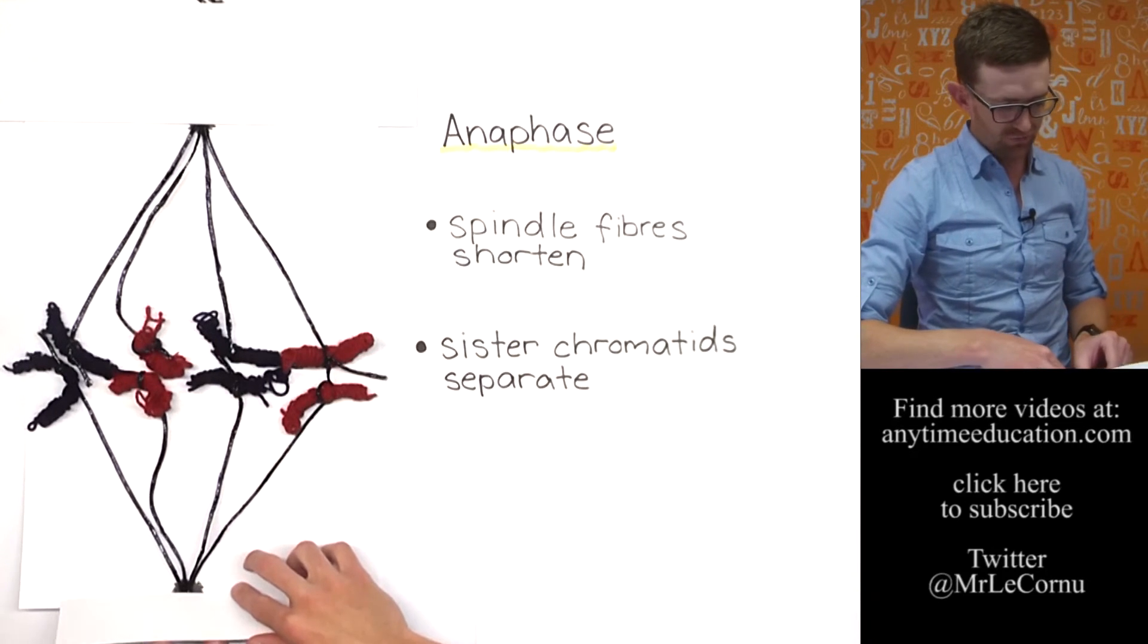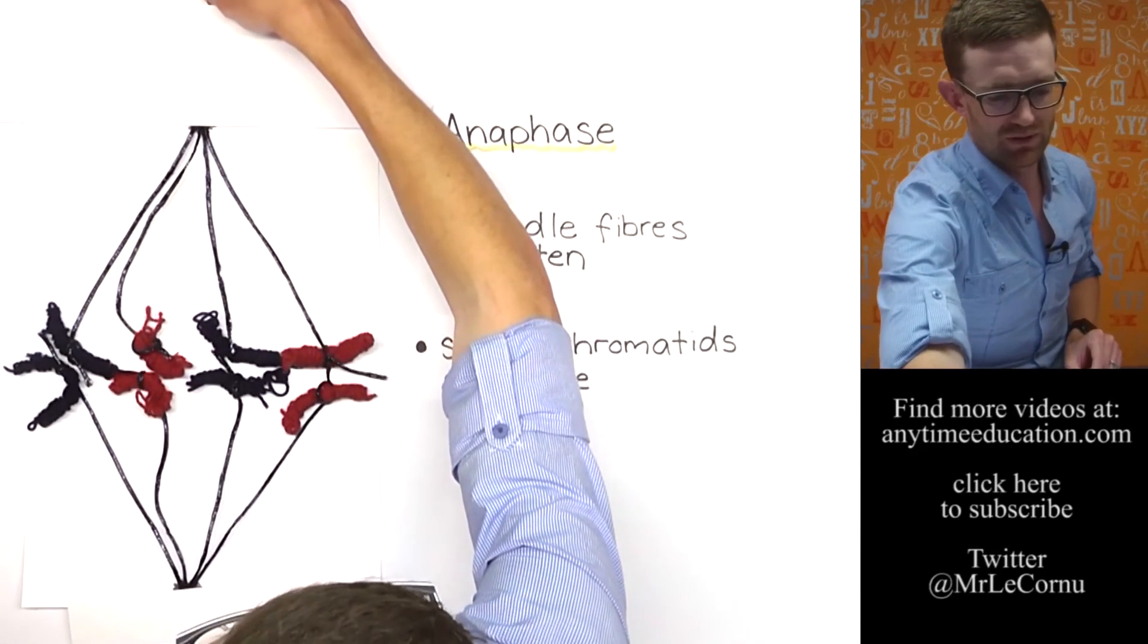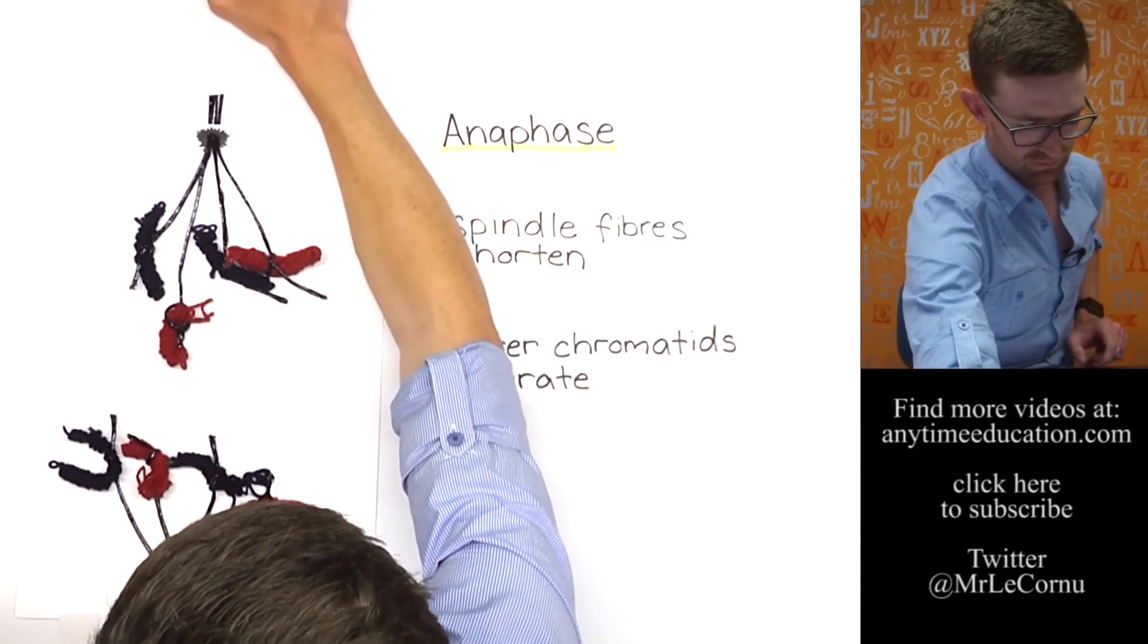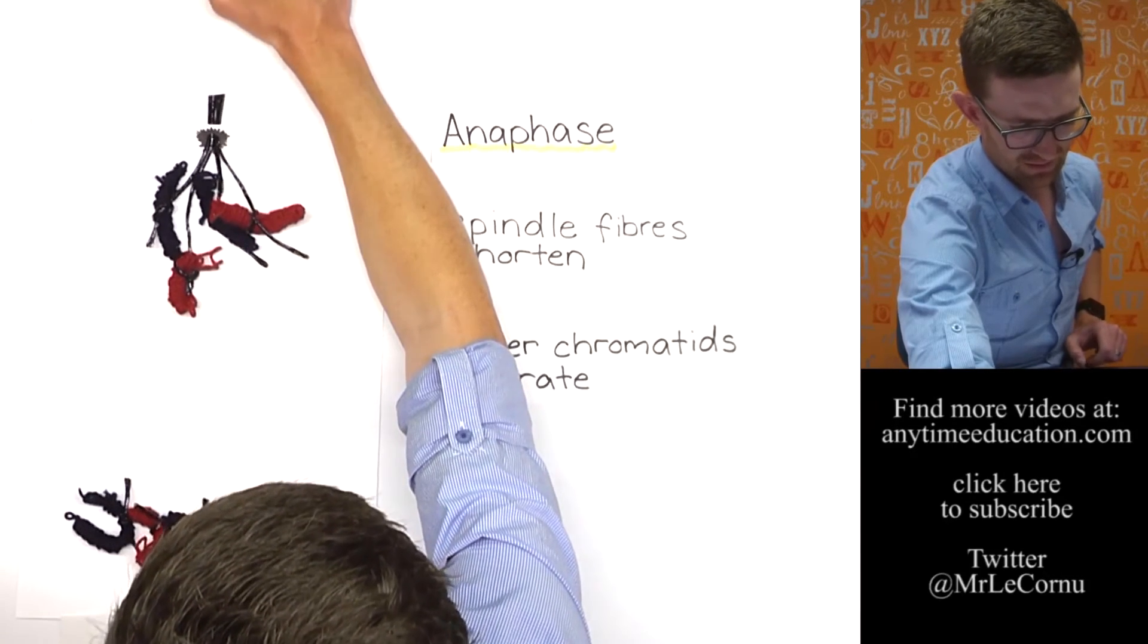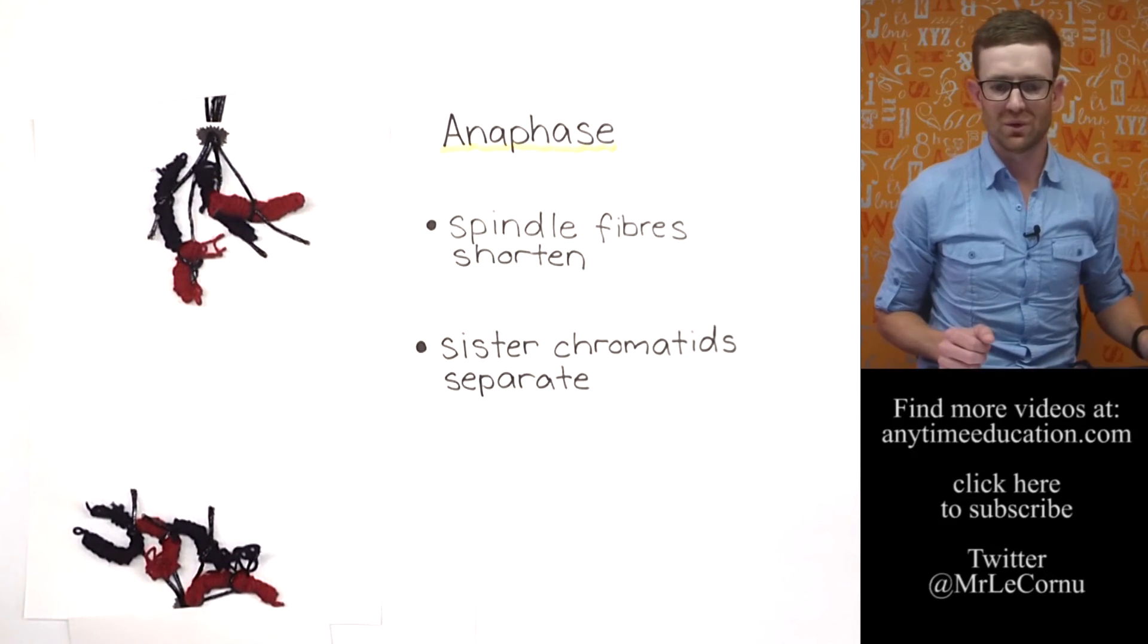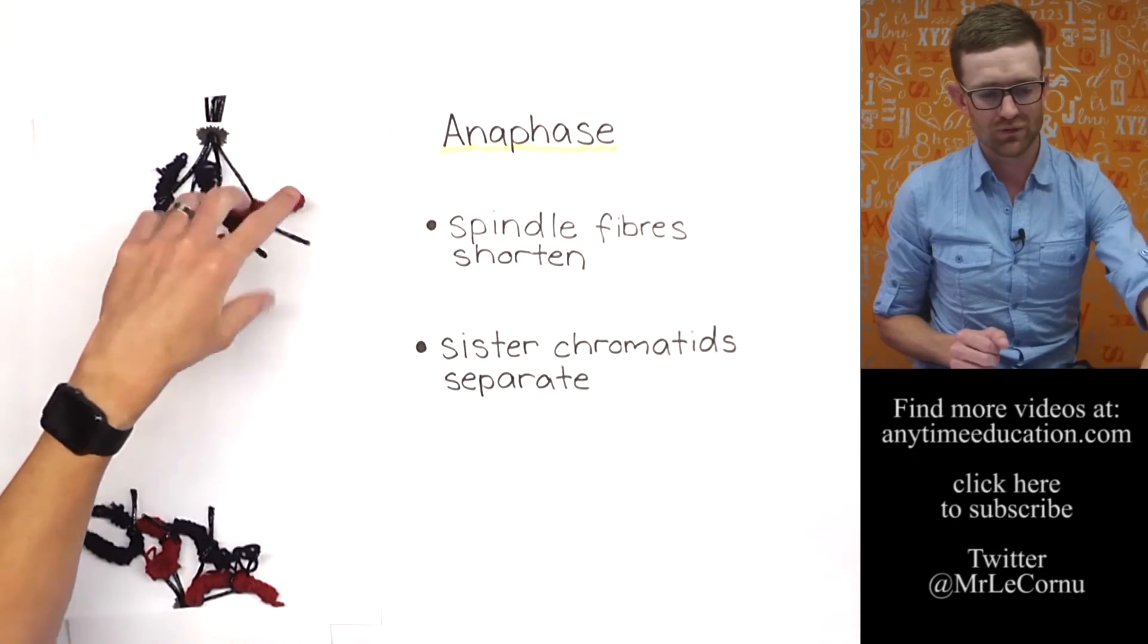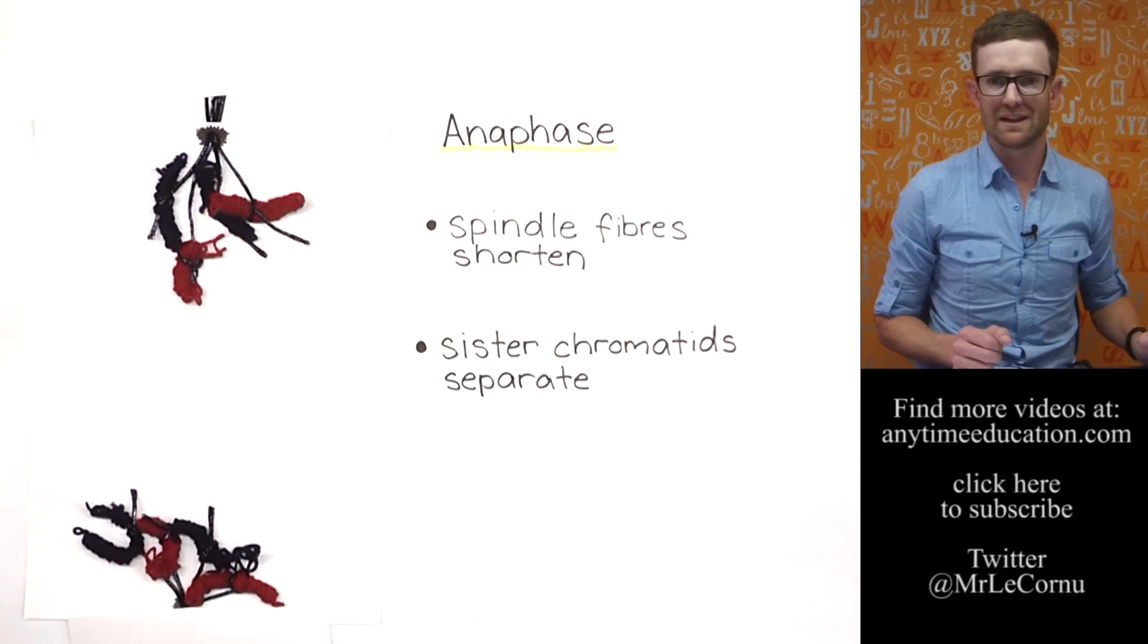And so we're going to have a go at visualizing what that actually looks like by shortening these spindle fibers. Let's have a go. As you see, the spindle fibers shorten and the sister chromatids have been pulled to opposite poles of the cell. Now I know that's probably not perfect, but it's a good way to visualize what's going on there. We've now got one, two, three, four chromosomes at this end of the cell, one, two, three, four chromosomes at that end of the cell.